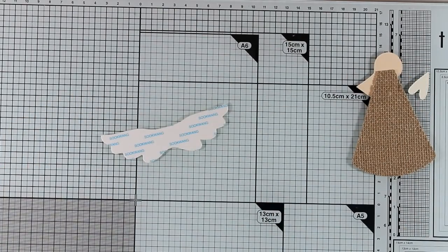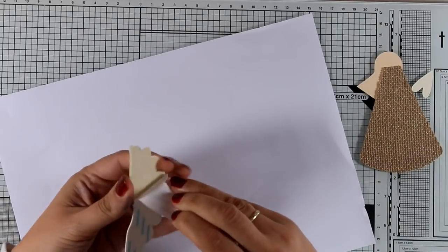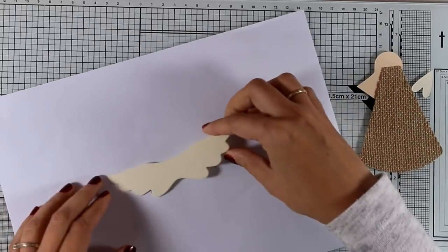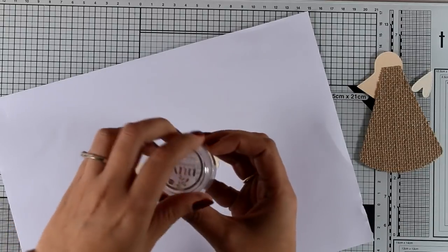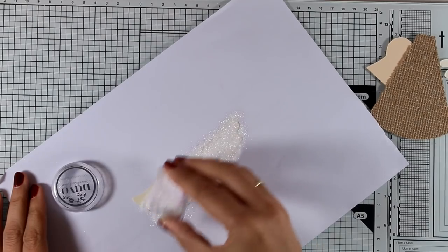This is where the double-sided tape that I used before cutting out my pieces is handy. So this is a sticker now and I can apply some glitter on top to decorate my wings.